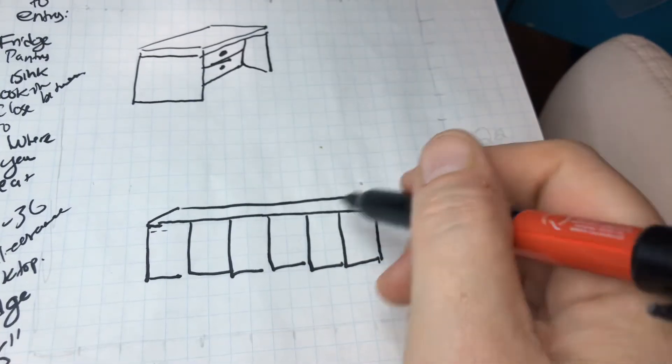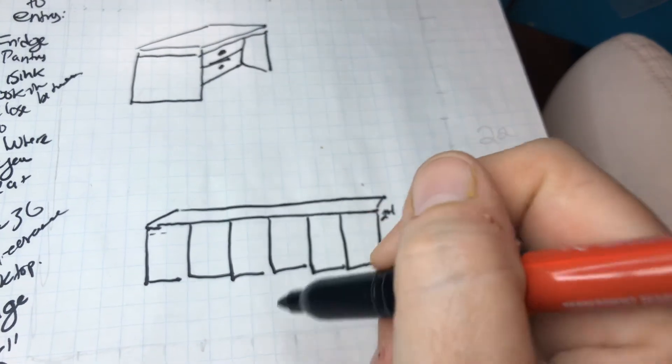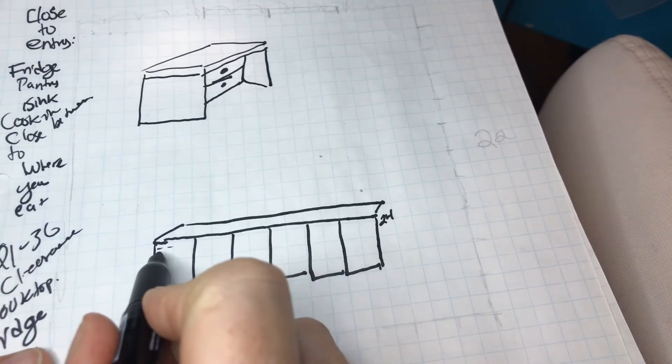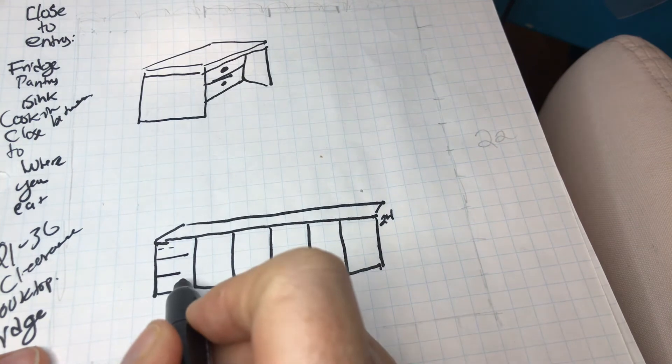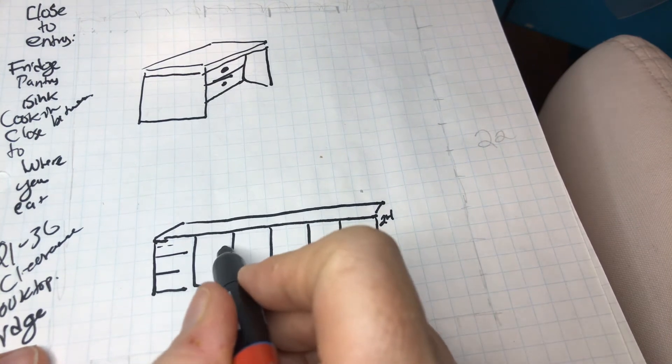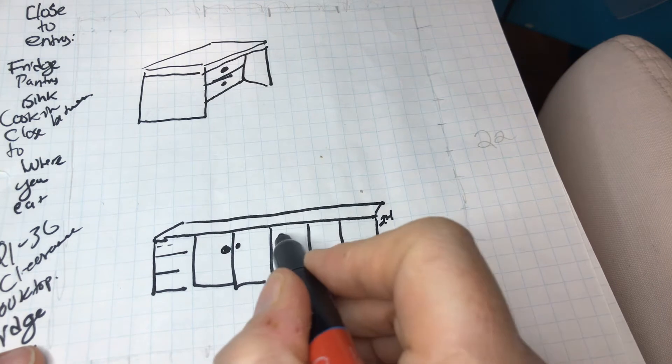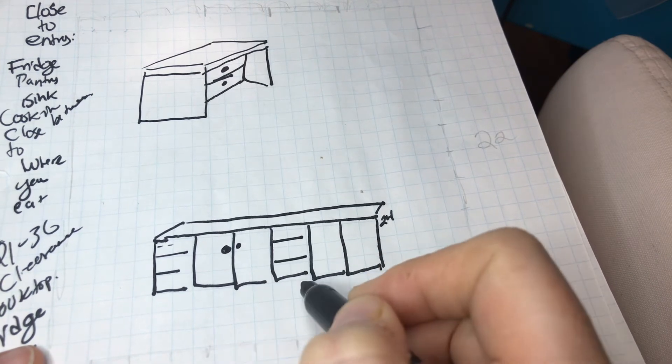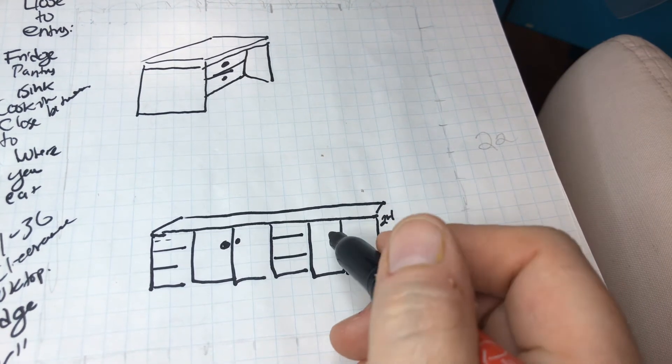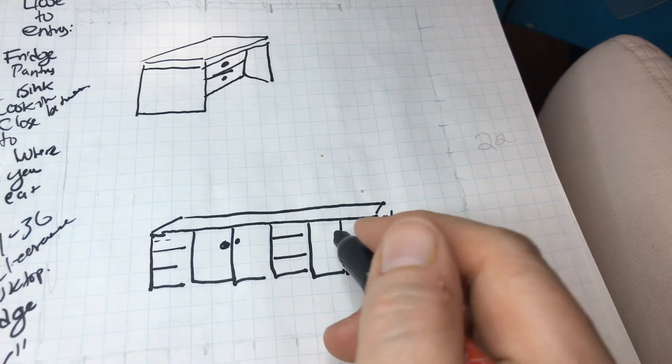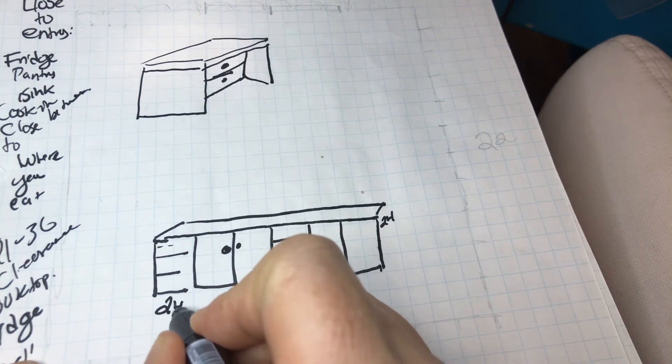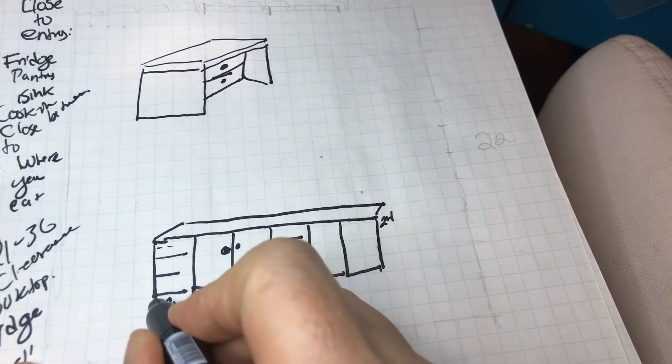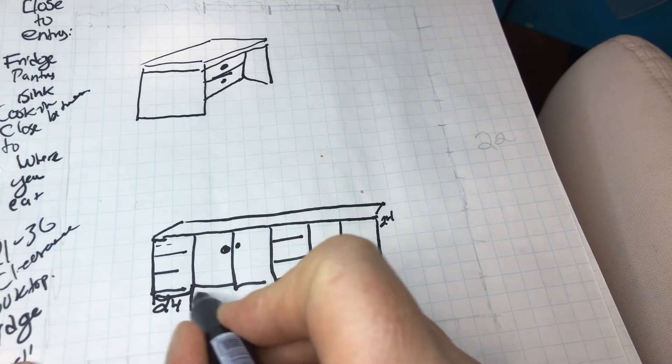Now base cabinets can include drawers. So I can have this one have drawers. This one can be like covered doors that open, right? This one can also have drawers and then your kitchen starts looking like a kitchen. So all of these are 24 inches because that's two feet, right? So two by two by two.